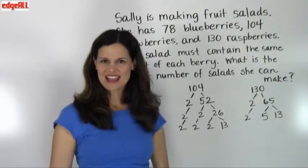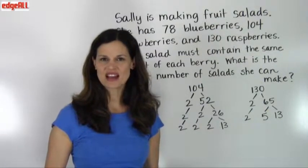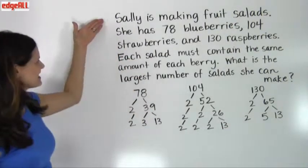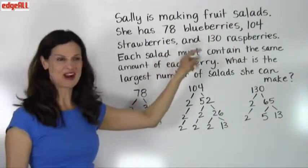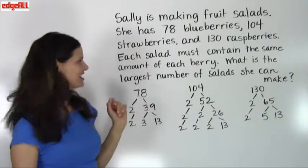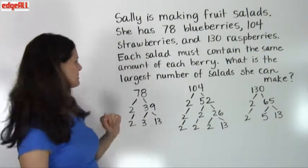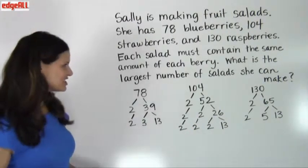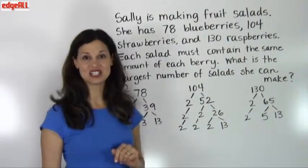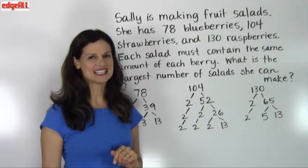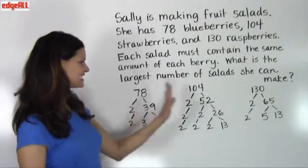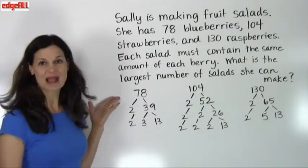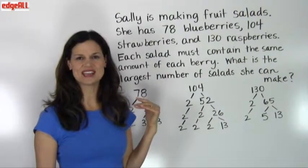Let's look at a real-life example of finding the greatest common factor of three numbers using prime factorization. Sally is making fruit salads. She has 78 blueberries, 104 strawberries, and 130 raspberries. Each salad must contain the same amount of each berry. The question is: what is the largest number of salads she can make? We need to find the greatest common factor of 78, 104, and 130.